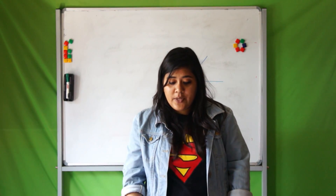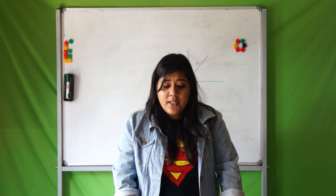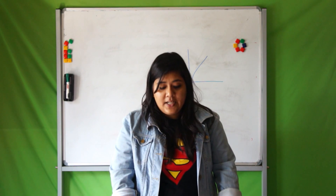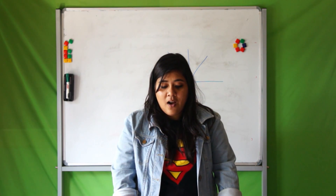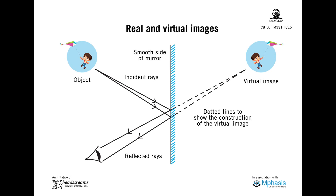After that, use the display sheet to explain what a real image and a virtual image are. A real image is formed when light rays coming from an object actually meet after reflection, and can be obtained on a screen. A real image is always inverted — a common example is the image formed on a cinema reel. A virtual image is formed when the outgoing rays from a point on an object always diverge. The display sheet will help you explain this to the children.